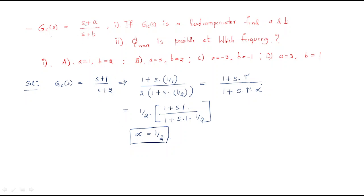With α = 1/2, we check which option satisfies (s+a)/(s+b). Substituting a=1, b=2 gives α = a/b = 1/2. Since for a lead compensator α is always less than 1, the answer is option A.